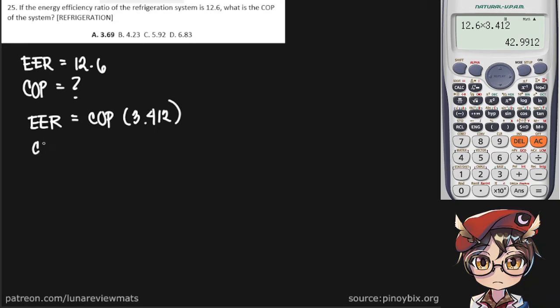Therefore, we can find COP by dividing our EER by 3.412. And putting our values in, we get...